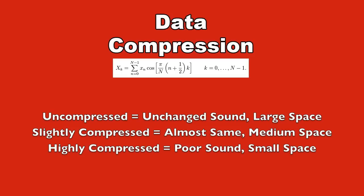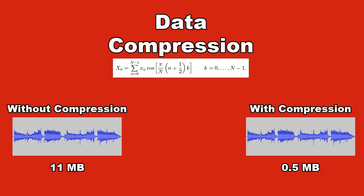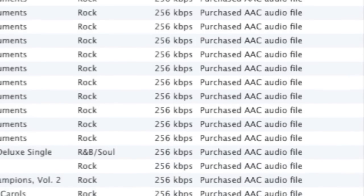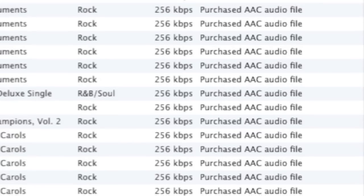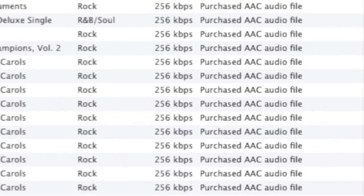For example, here's a music clip with very little data compression — only what YouTube puts on it automatically. Here's the same clip with extreme data compression. The music library on your computer probably uses data compression, but not so much that you can hear artifacts like swirling and muffling like you hear in the second example.